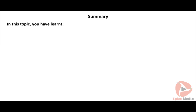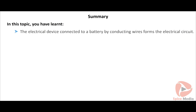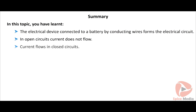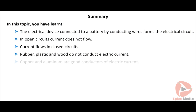In this topic you have learned that an electrical device connected to a battery by conducting wires forms an electrical circuit. In open circuits, current does not flow; current flows in closed circuits. Rubber, plastic, and wood do not conduct electric current, while copper and aluminium are good conductors of electric current.